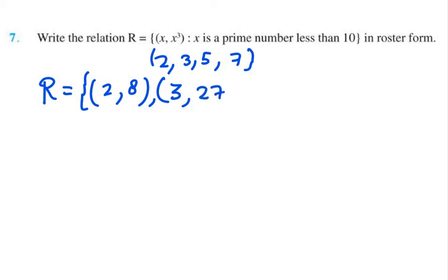Then next one is 5. So 5 comma 5 cube. 5 cube can be written as 125. Then 7. 7 and 7 cube. 7 cube can be written as 343.